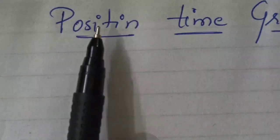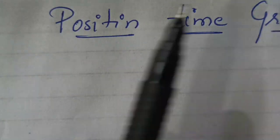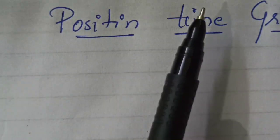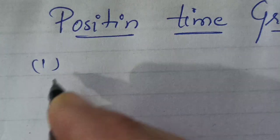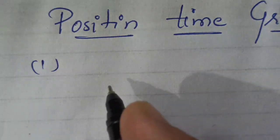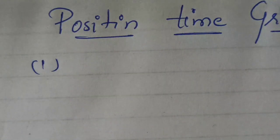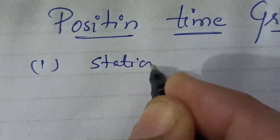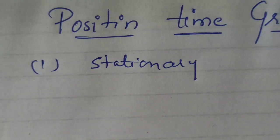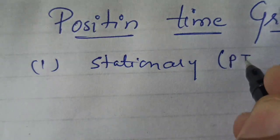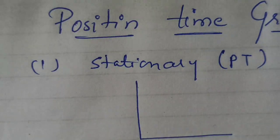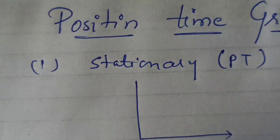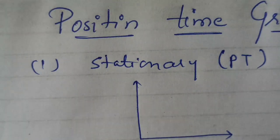Today we are going to study the position-time graph, and we will draw this PT graph for different bodies under different conditions. The first condition we will take is when you have a stationary object. Remember that on the PT graph, the x-axis always represents time and the y-axis represents position.